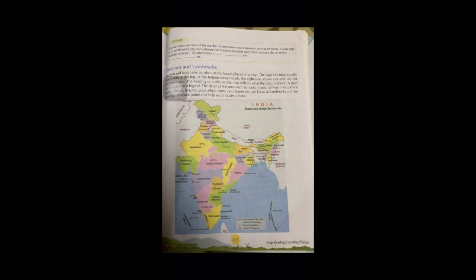You can easily find out which state is where. The northern part, the top, is always shown as the north, then you have the south, west, and east. At the bottom right side of the map, you will see there's an international boundary, state and union territory boundary.